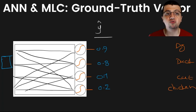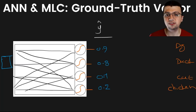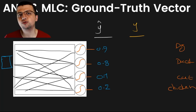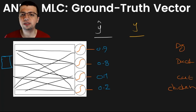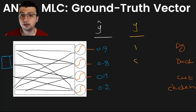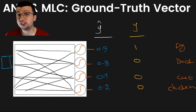Now the question is: how am I going to present my ground truth vector? For multi-label classification problems, things are a little bit different compared to multi-class classification. In multi-class classification, you represent your ground truth vector y with a one-hot encoding vector — meaning if you have four classes, only one element of the y vector can be 1 and everything else has to be 0, for example [1,0,0,0], or [0,1,0,0], or [0,0,0,1].